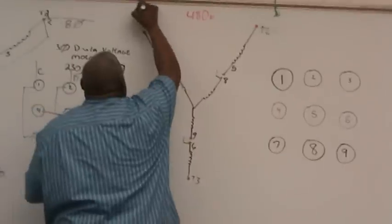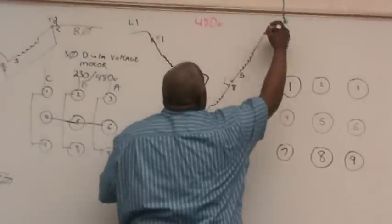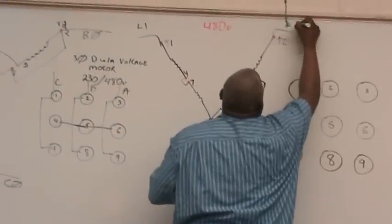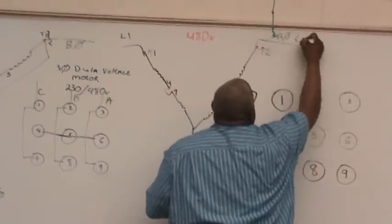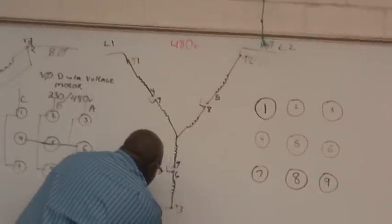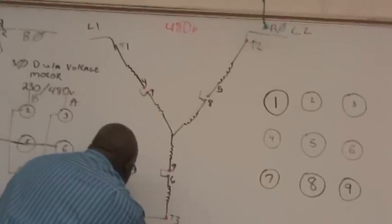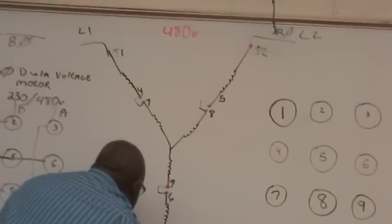Connect A phase, or line one, to T1. B phase, or line two, to T2. And T3 is C phase, or line three.